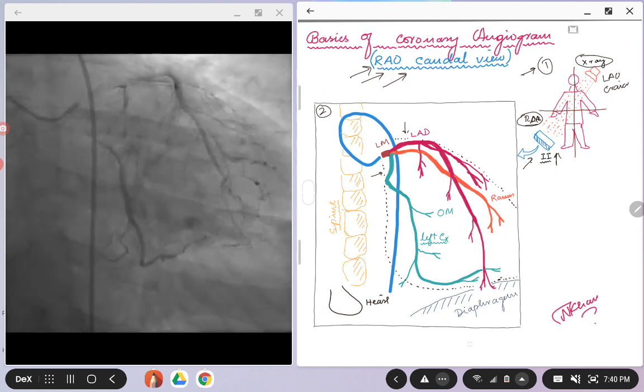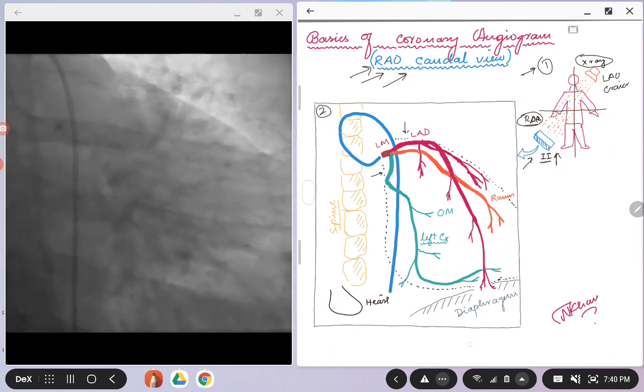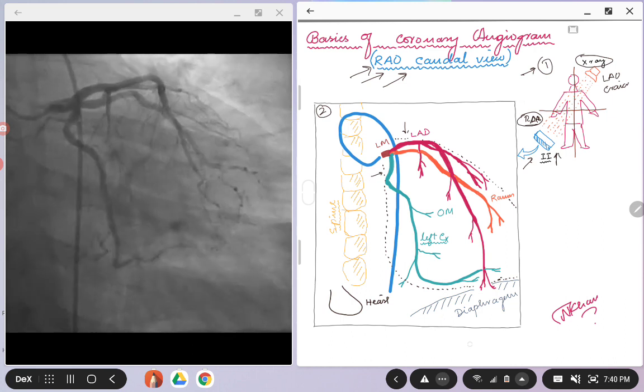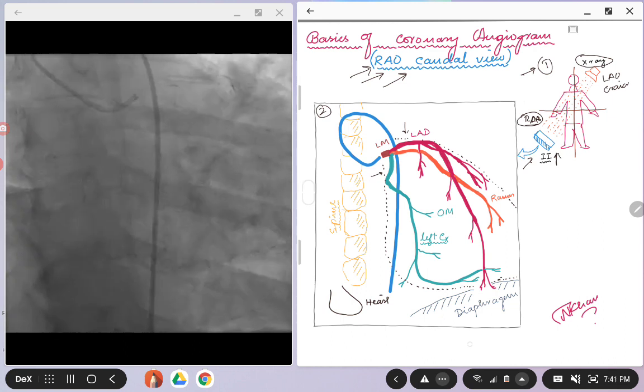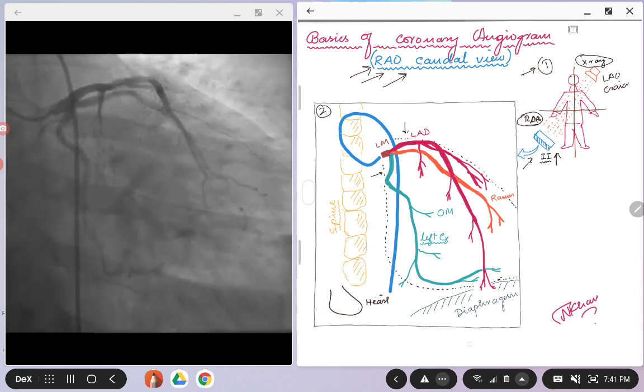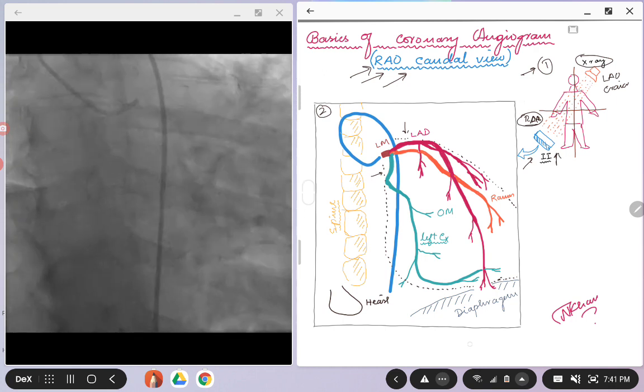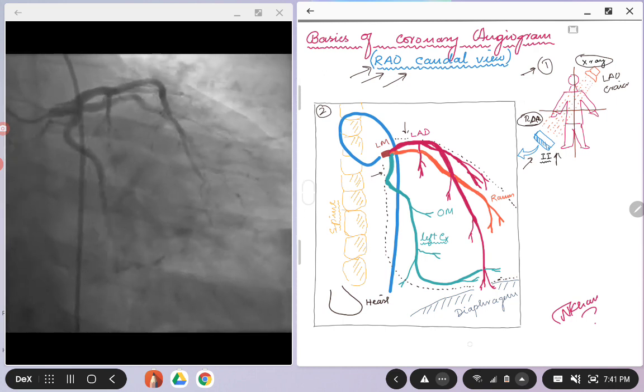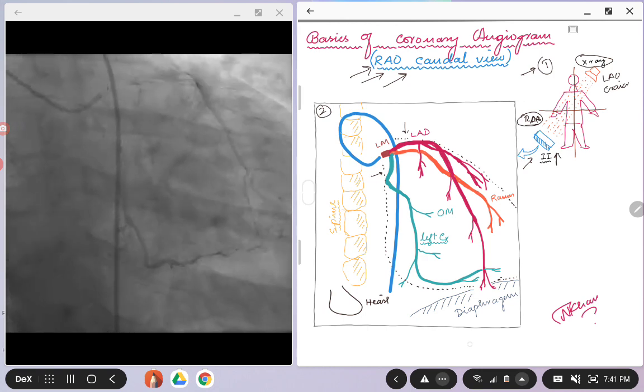So with that we come to this cine loop on the left. If nobody tells me anything about this view and they just show you this view and ask you what kind of view it is, you basically have to go through one or two checklists and you will be able to know what kind of view it is.